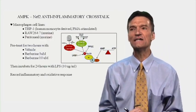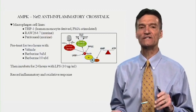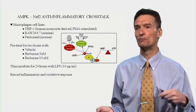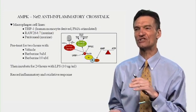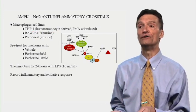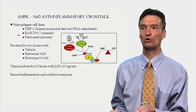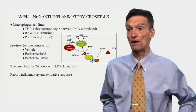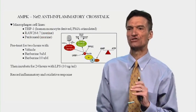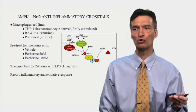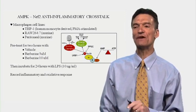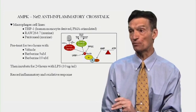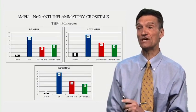Let's talk about AMPK-Nrf2 anti-inflammatory crosstalk. We're going to take human macrophages — white cells, monocyte-derived macrophages. THP-1 cells are commercially available human monocyte-derived stimulated macrophage cell lines. Another source is murine RAW 264.7 cells, or fresh macrophages from the peritoneal cavity of a mouse. We're going to take these macrophages, pretreat them for 2 hours with vehicle control, low or high dose berberine, then incubate for 24 hours with lipopolysaccharide and record the inflammatory and oxidative response.